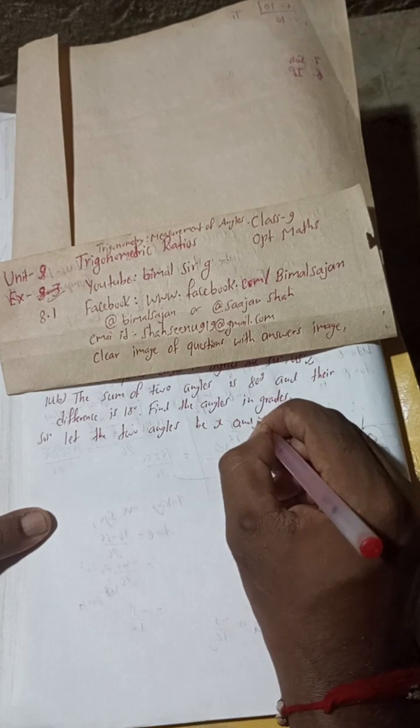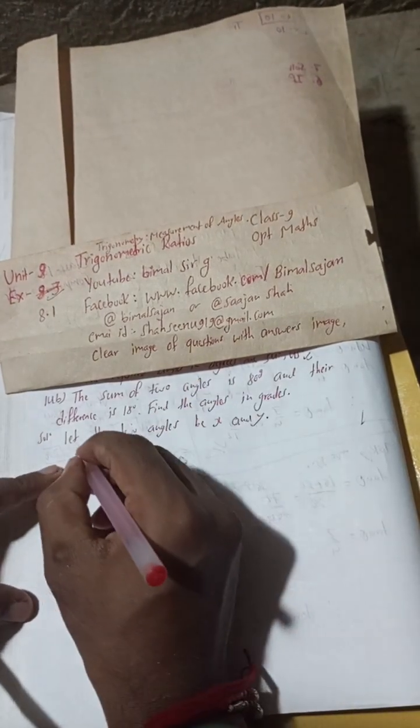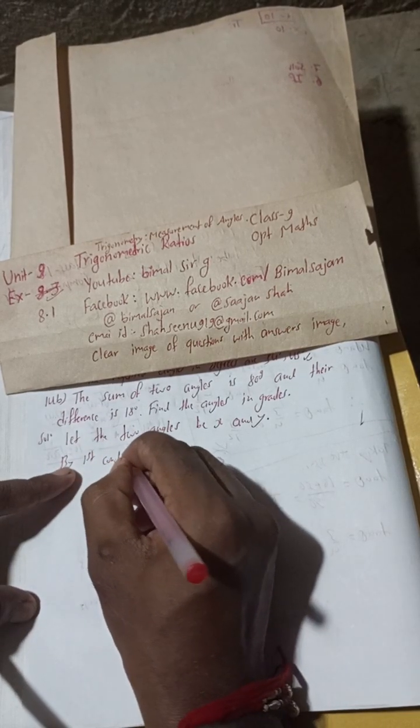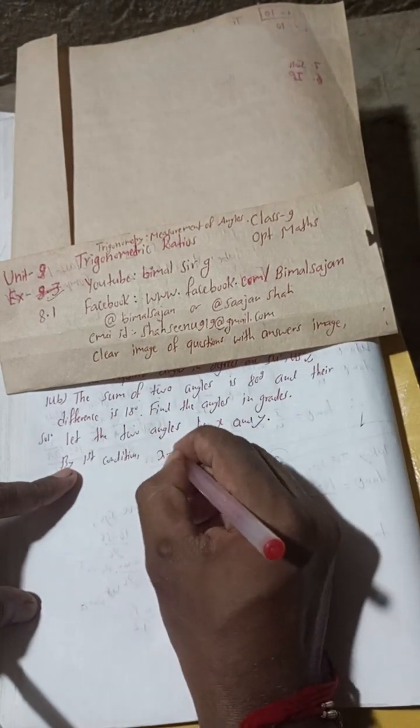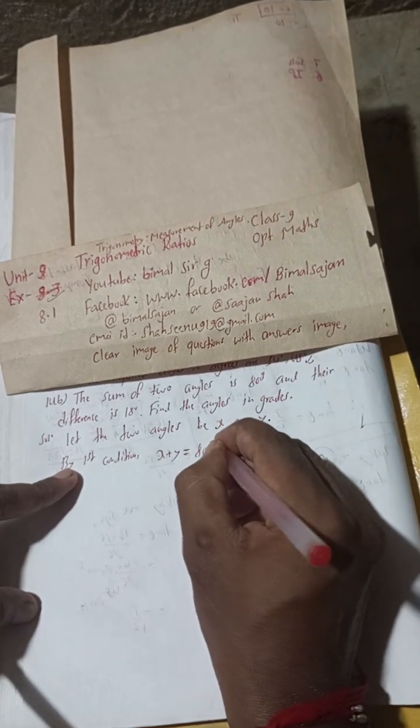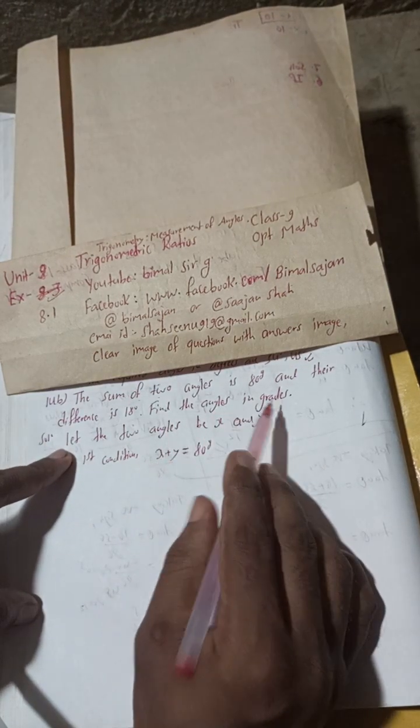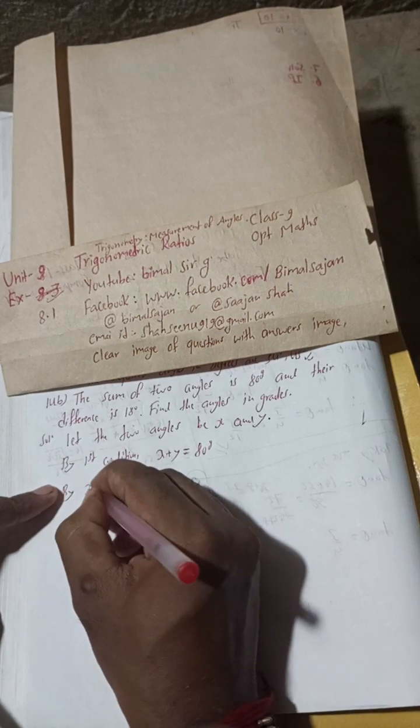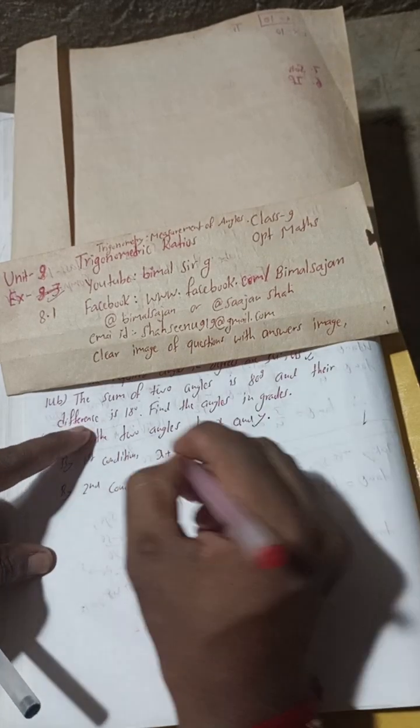By first condition, sum of two angles means x plus y is equal to 80 grade. We have to find in grade, so keep it in grade only. By second condition, the difference x minus y is equal to 18 degree.